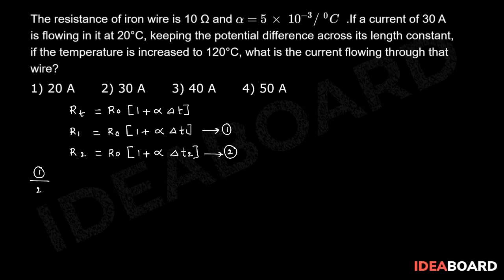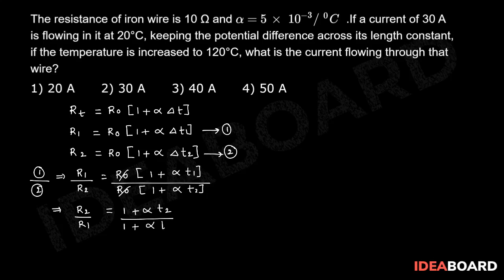Equation 1 divided by equation 2, R1 by R2 equals R0 (1 + α T1) over R0 (1 + α T2). Therefore R0 gets cancelled. So let us take R2 by R1 for convenience, that is (1 + α T2) by (1 + α T1).